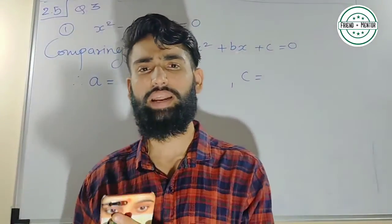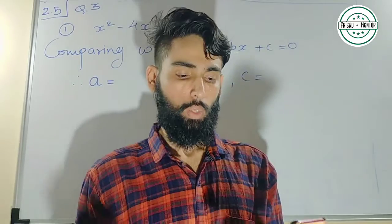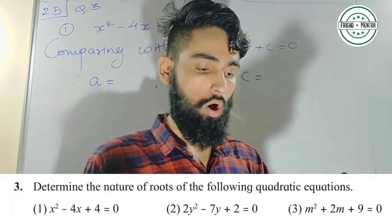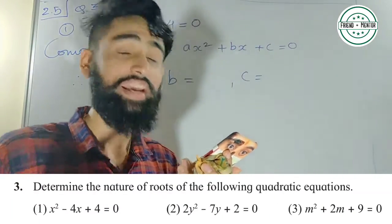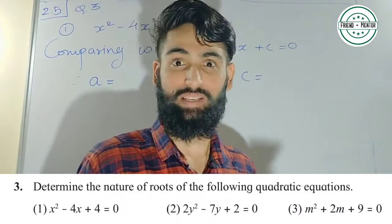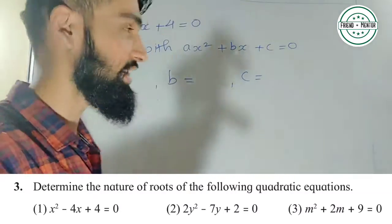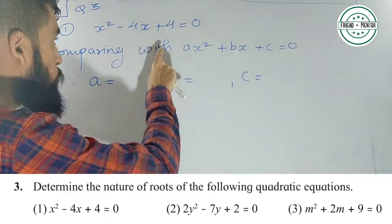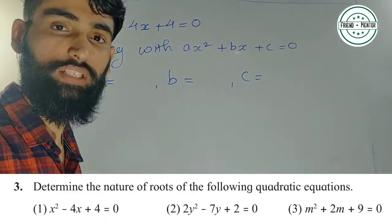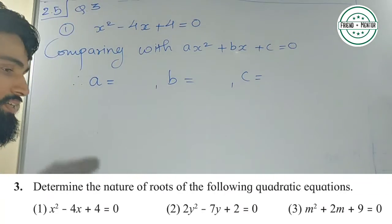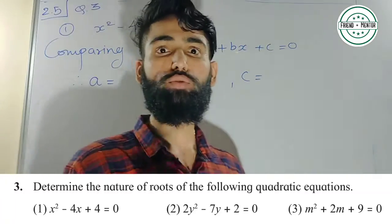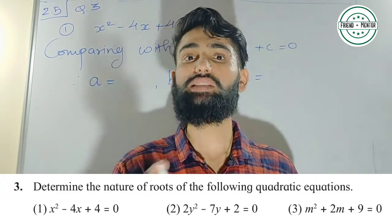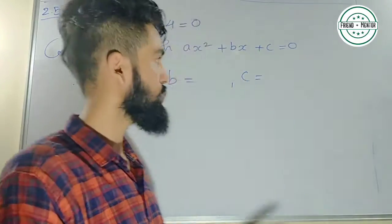So अब हम लोग करेंगे question number 3: determine the nature of the roots of the following quadratic equations. Roots नहीं निकालना है, सिर्फ nature निकालना है। Question number 1: x² − 4x + 4 = 0. हमें nature of the root चाहिए — nature of the root कैसे पता चलता है? Discriminant से। Discriminant के लिए a, b, c के values चाहिए, इसलिए comparing with x² + bx + c = 0.